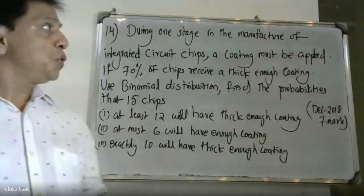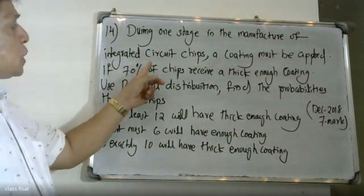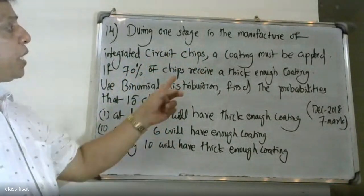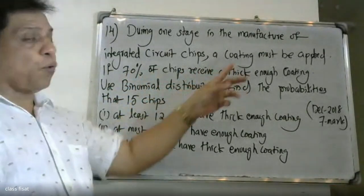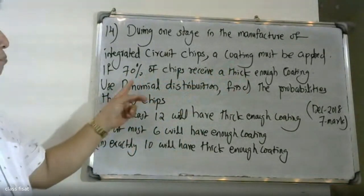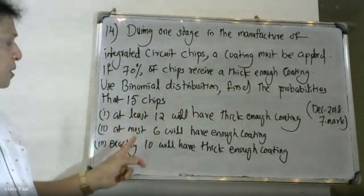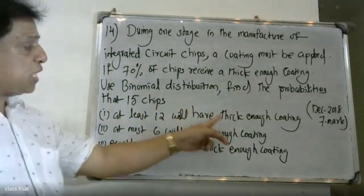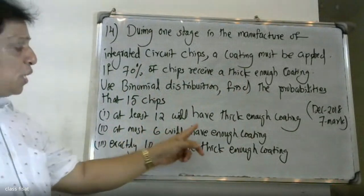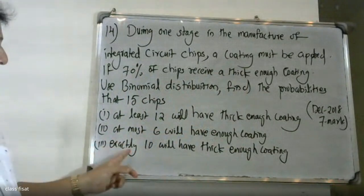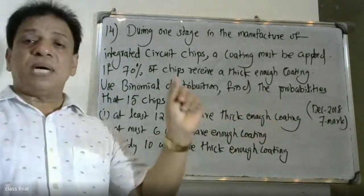Good morning students. During one stage in the manufacturing of microchips, a coating must be applied. If 70% of chips receive a thick enough coating, use the binomial distribution to find the probability that, from 15 chips: first, at least 12 will have thick enough coating; second, at most 6 will have enough coating; third, exactly 10 will have thick enough coating.